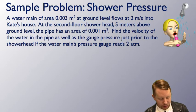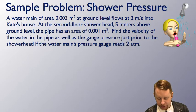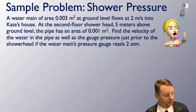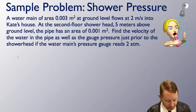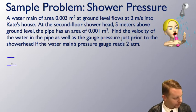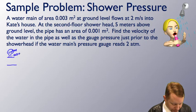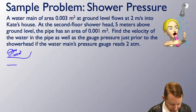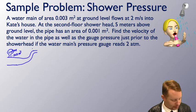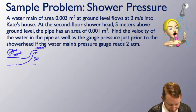Let's take a look at another one, the shower pressure. A water main of area 0.003 square meters at ground level flows at 2 meters per second into Kate's house. At the second floor shower head 5 meters above ground level, the pipe has an area of 0.001 meter squared. Find the velocity of the water in the pipe as well as the gauge pressure just prior to the shower head if the water main's pressure gauge reads 2 atmospheres. So I'm going to start by drawing a bit of a diagram here. It looks to me like we've got water coming in in a pipe that's at about, if we put a gauge on here, about 2 atmospheres. And at this point it's 0.003 square meters in area. Now it runs a little distance, probably comes up a little bit into the house, constricts, and at this point it's 0.001 square meter in area. And this height difference is 5 meters. And we know over here that the velocity is 2 meters per second.